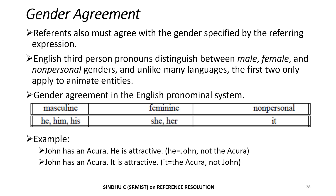Gender agreement: reference must also agree with the gender specified by the referring expression. English third person pronouns distinguish between masculine, feminine, and non-personal genders, and unlike many languages, the first two only apply to animate entities. For example: 'John has an Acura. He is attractive' — here 'he' refers to John and not Acura. 'John has an Acura. It is attractive' — here 'it' refers to Acura. So gender agreement is observed.